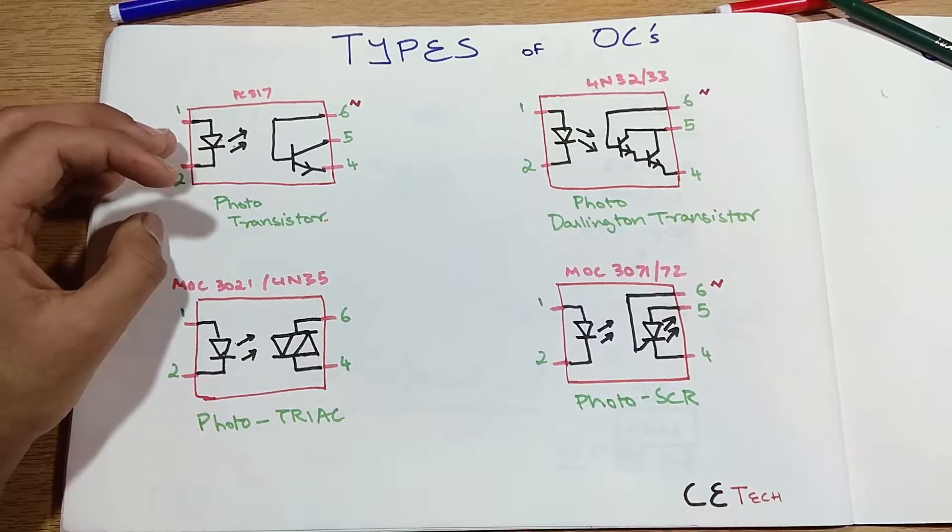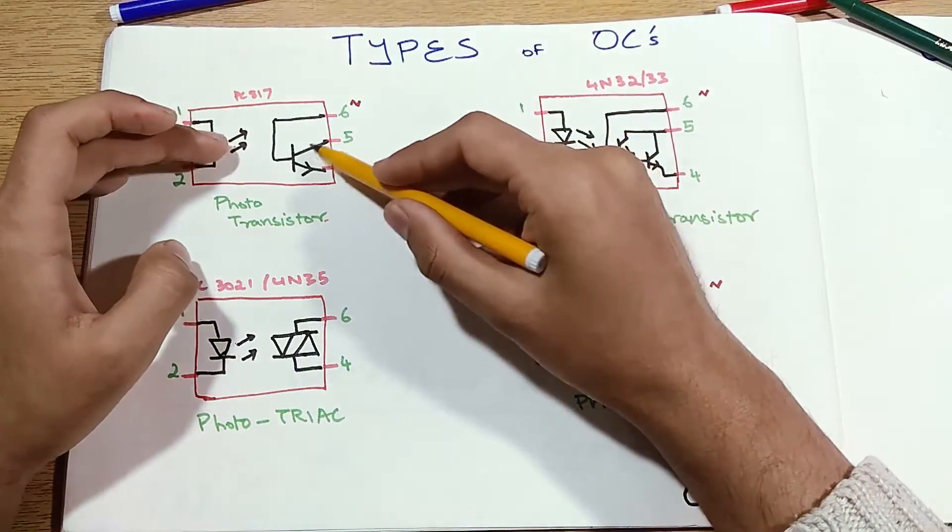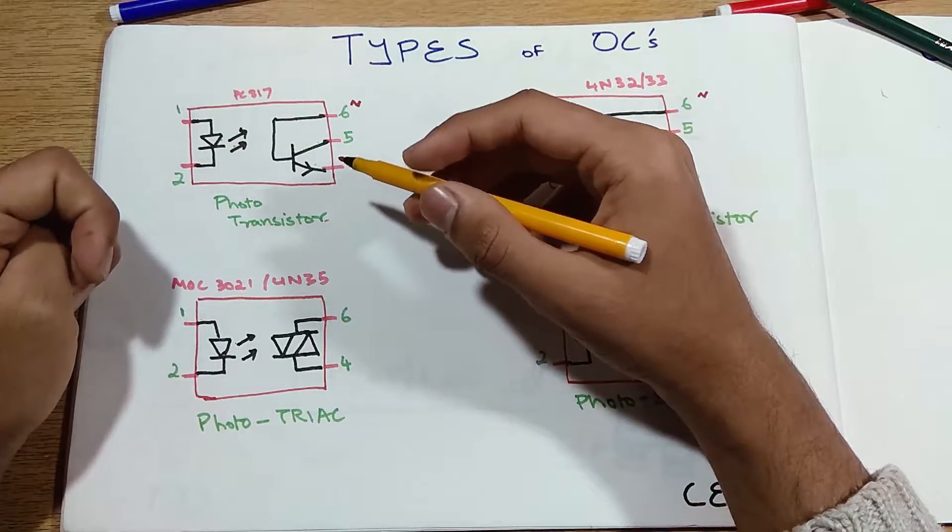So on the output side these types of OCs are different. The first one is the photo transistor type, the photo darlington transistor type, the photo triac type and the photo SCR type. Let's see how these are different.